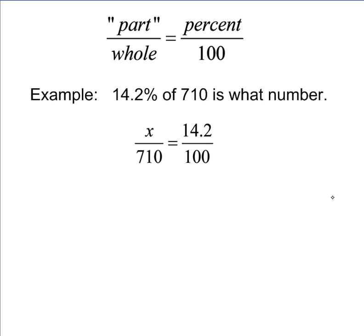In the next example, I'm going to solve the problem of 14.2% of 710 is what number. I've set up the proportion as x over 710 equals 14.2 over 100. Notice when you're using this method you do not have to change the percent to a decimal because we are dividing by 100. This one is difficult to do by inspection so we're going to use the cross multiplication strategy.